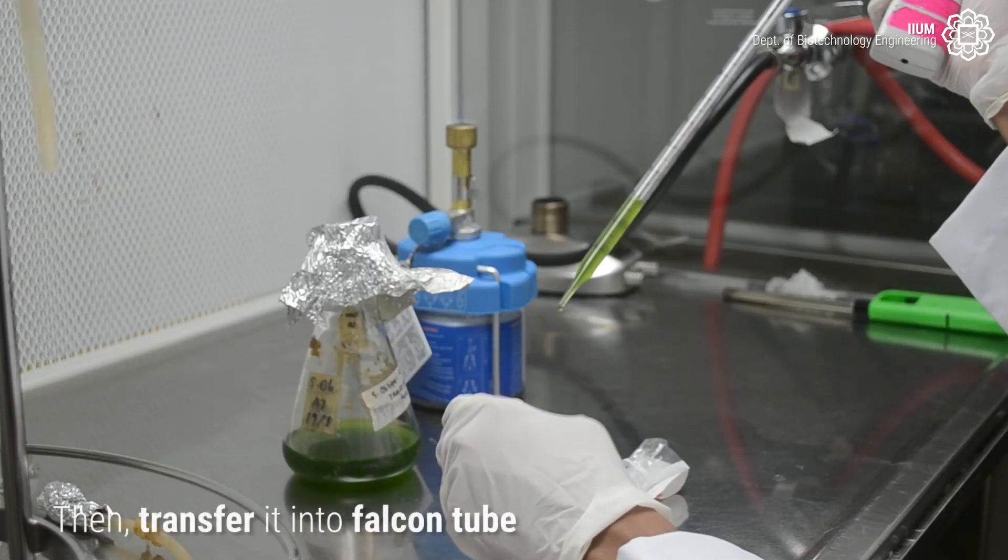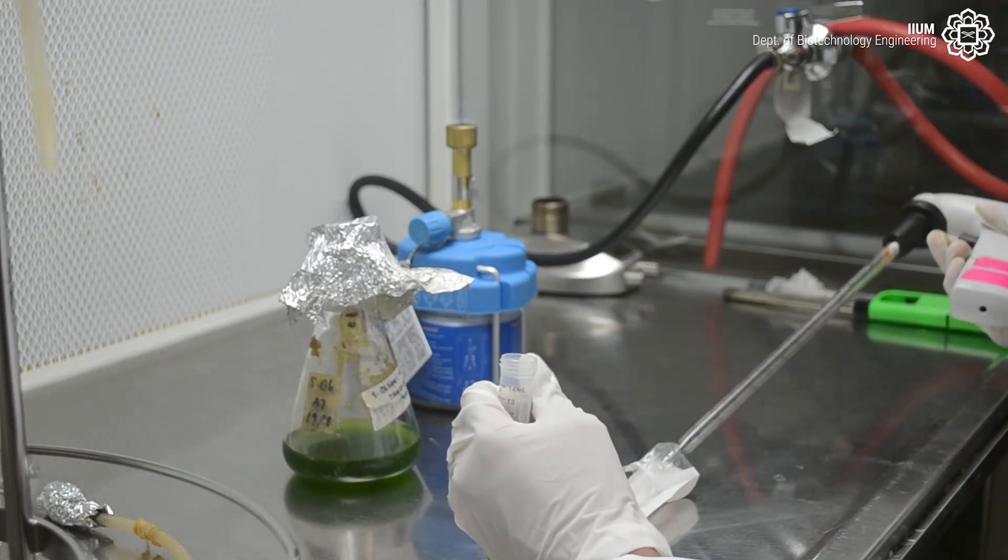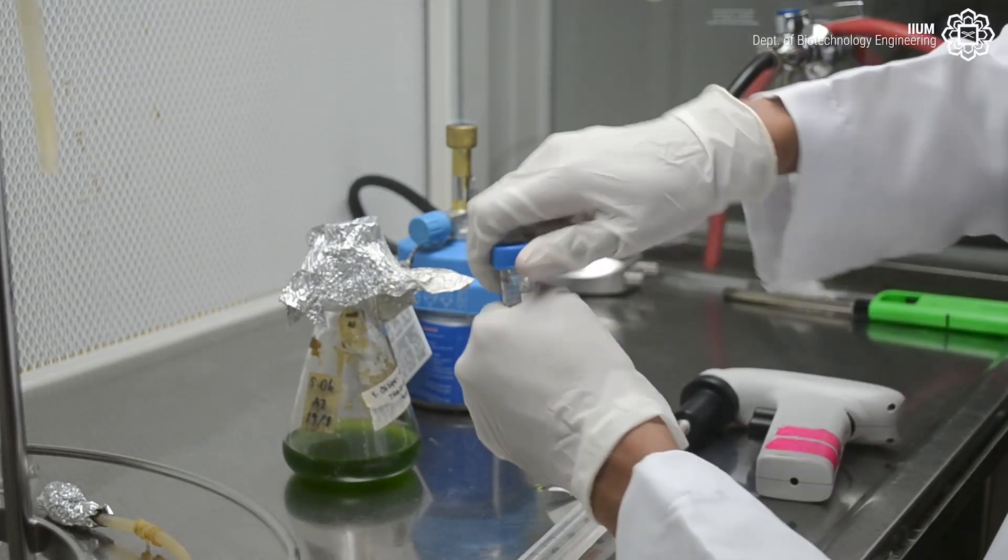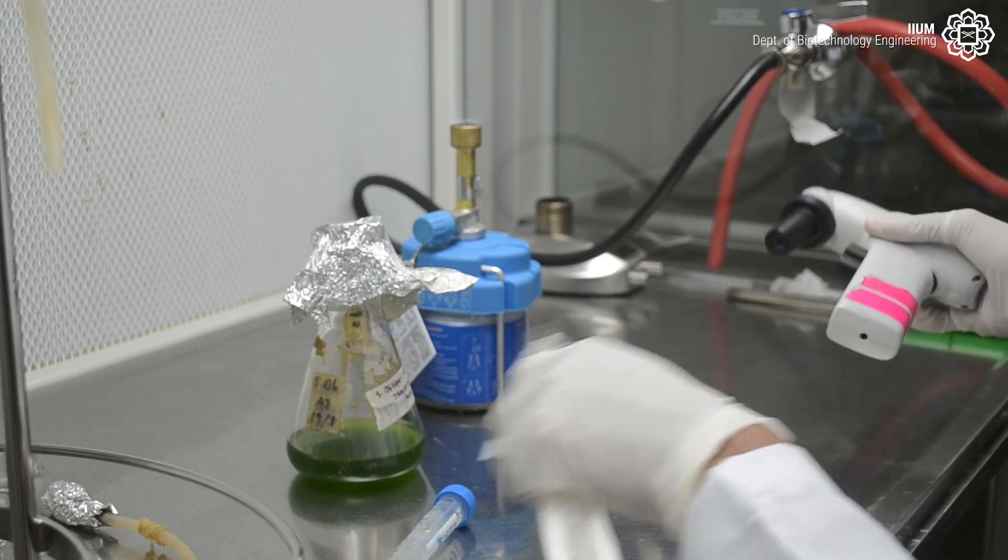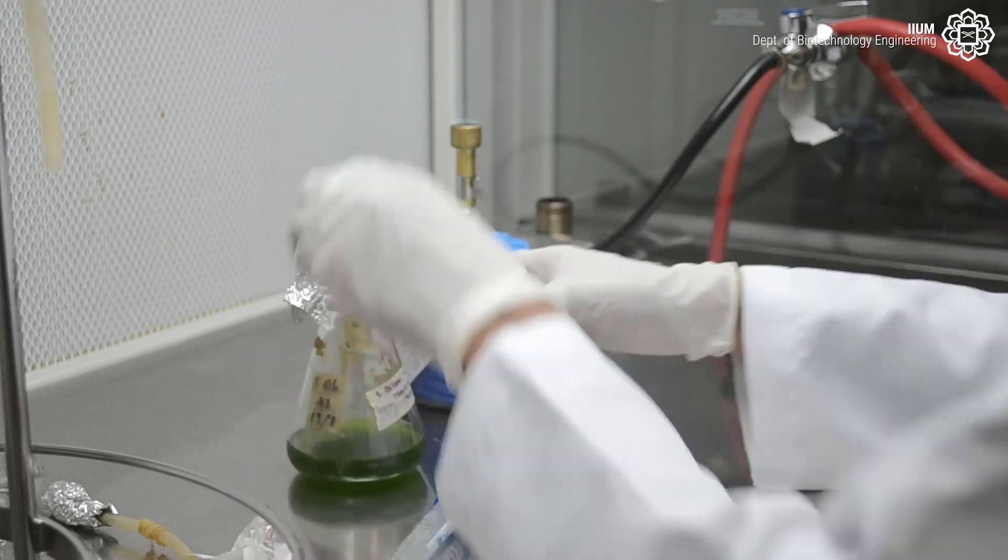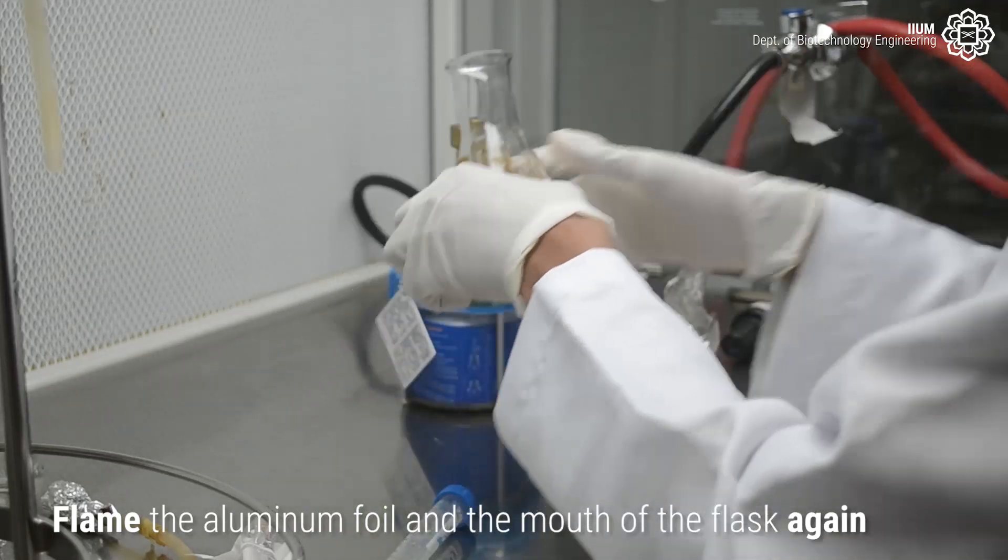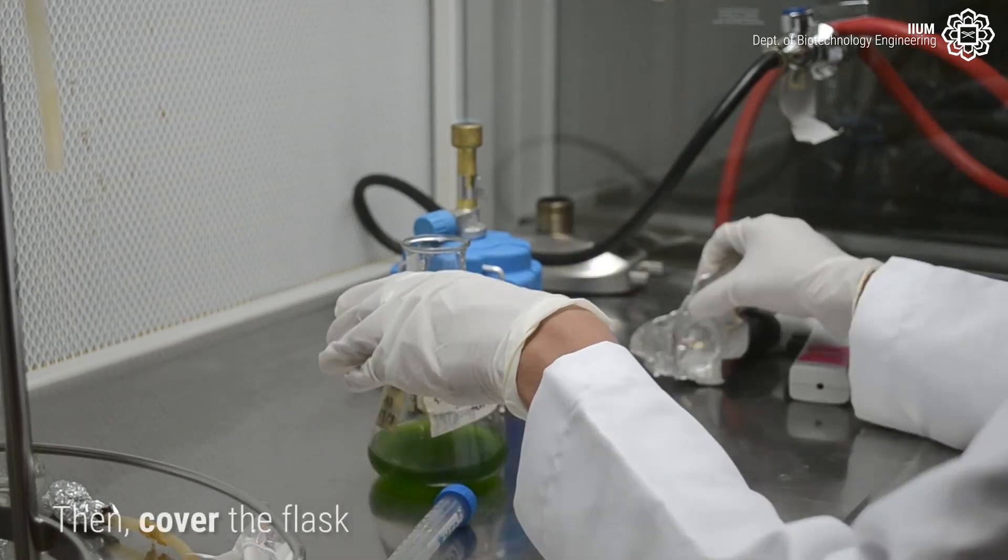Then transfer it into a falcon tube. Flame the aluminum foil and the mouth of the flask again. Then cover the flask.